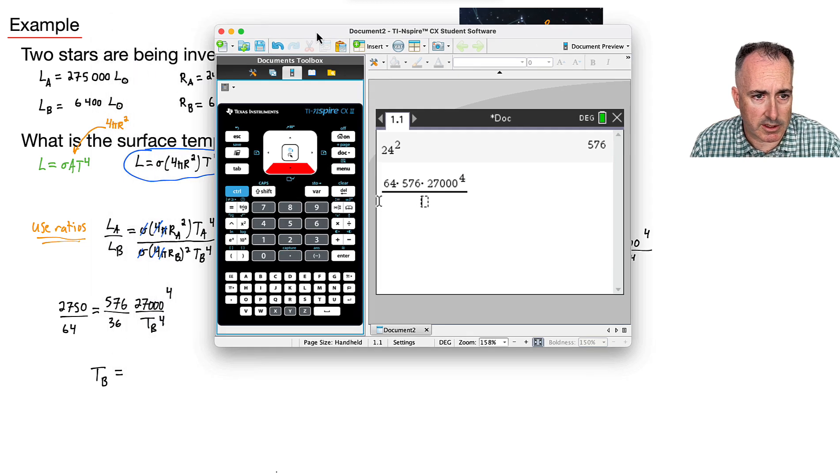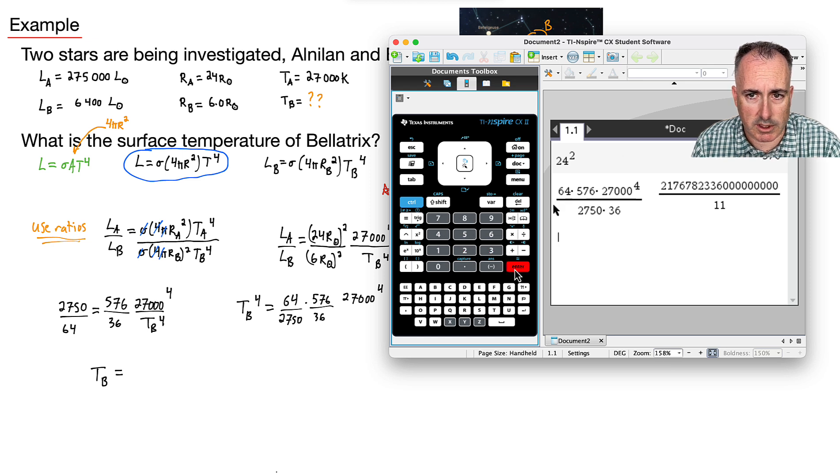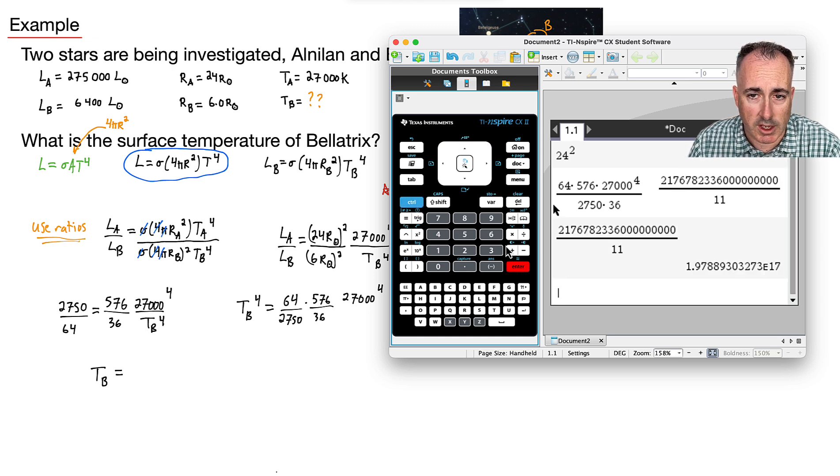Okay, all that divided by, let's see, I've got 2750 times 36. And I get this answer. Remember, oops, I want my answer in like an actual decimal.